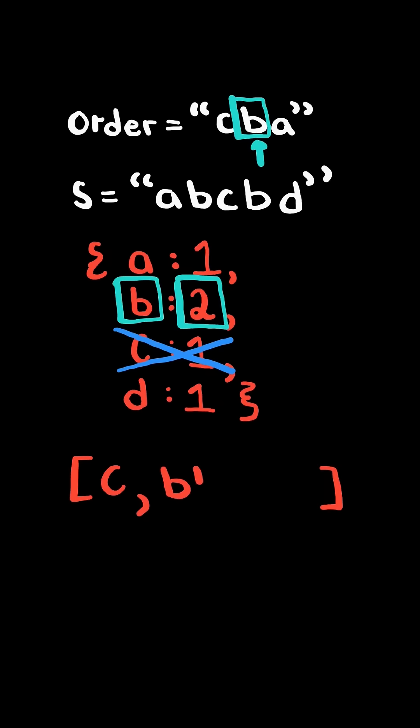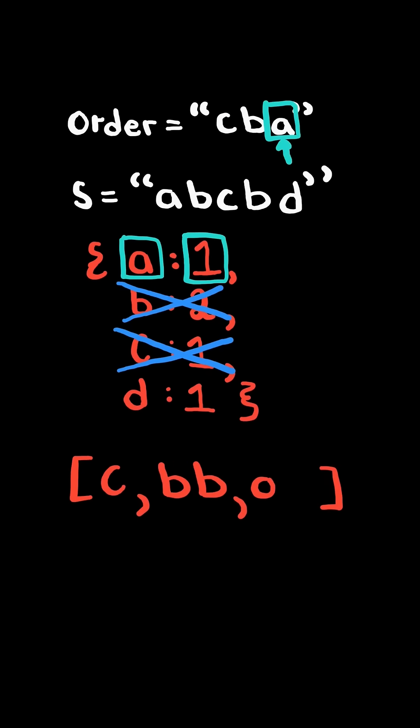Again, we append the character times its count and delete the entry from the map. Once more, we append the character times its count and delete the entry.